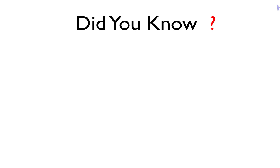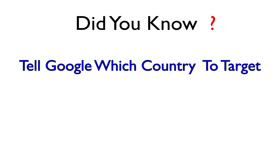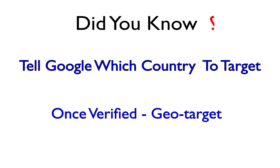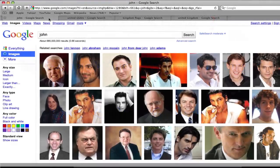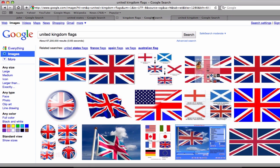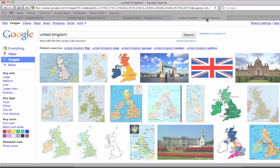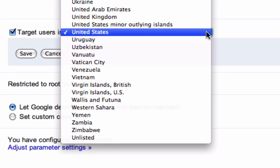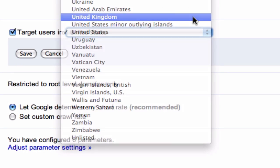Did you know that you can help Google determine which country you want your website to target? Once you have created your sitemap and verified your website with Google, you can begin a very easy process to geographically target your website. First, I want to explain why it might be necessary to do this. Let's say that John lives in the United States and his website sells United Kingdom flags. John thinks that a large majority of his customers are from the United Kingdom, so John tells Google to geographically target his website to users from the UK.